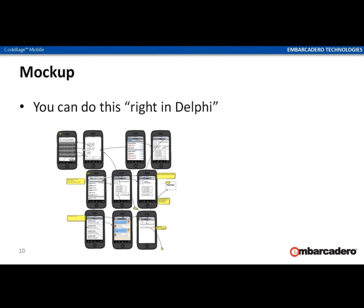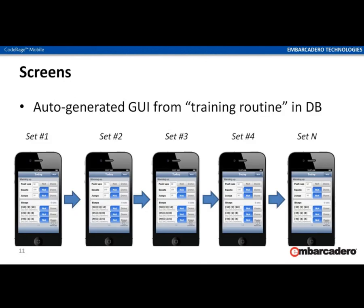After we have made up a scenario, we can compose a mock-up. Usually we use special software like Balsamiq, but in our case the GUI prototype can be done right in Delphi. Delphi allows fast prototyping — it doesn't mean Delphi has mock-up tools per se, but Delphi is very fast, so you can sometimes skip that step and do prototypes right in the IDE. In our case it's simple: we have a series of screens changed by command once all exercises are done.